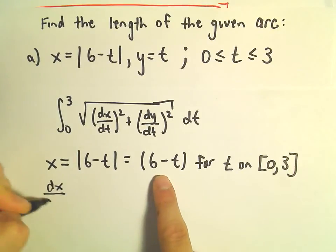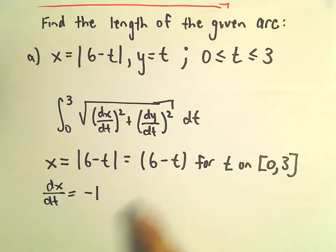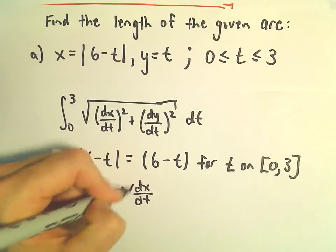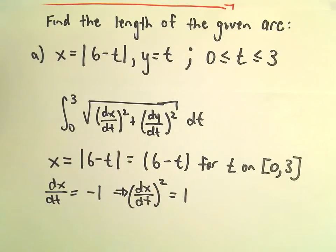Well that says the derivative of x with respect to t then is just going to be negative 1. And that tells us the derivative of x with respect to t squared is just going to equal positive 1.